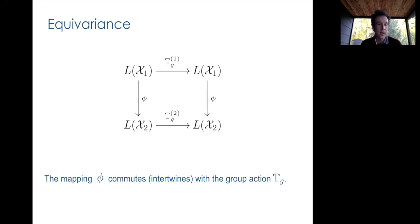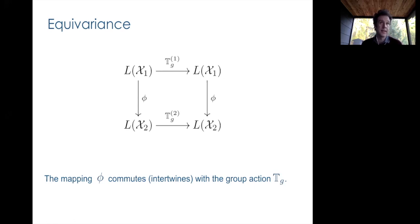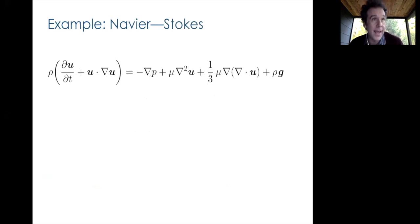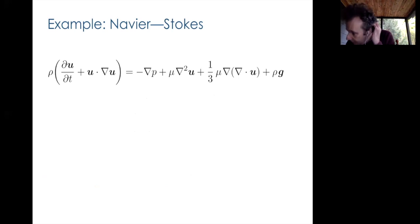In our context, phi is going to be the whole neural network. We're learning something about physics, and what we want to enforce is that this something needs to be invariant with respect to changes of coordinate system, or equivariant in the sense that if you're learning a vector-valued quantity, the output needs to transform according to the same transformation as your inputs. Equivariant neural networks are a class of neural networks with this property baked in.